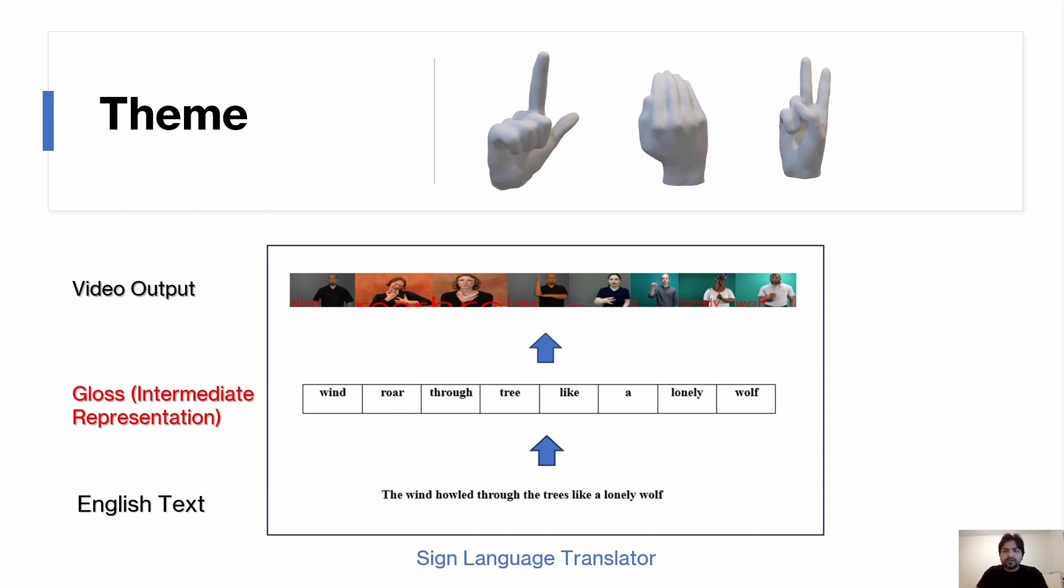Here is how the model works. You type in the text and behind the scenes, the text gets converted into what we call glosses, which is the intermediate representation of the text. Basically it's like breaking down the words into sign language terms. Each of these glosses matches up with a video showing the sign in action, which are synced perfectly with the text.